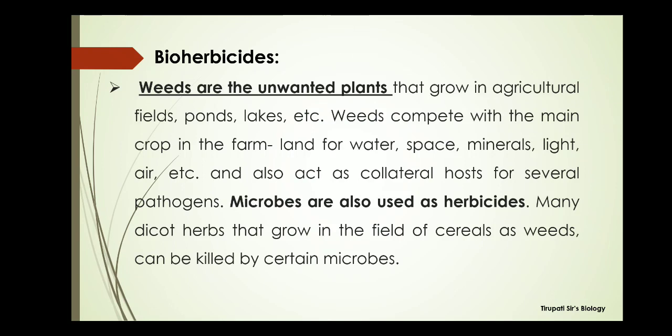Bio means microbes which we use as herbicides. Herb refers to plants — specifically weeds found in agriculture fields growing alongside crops like paddy, wheat, maze, and grains. Weeds are unwanted plants found in agriculture fields.